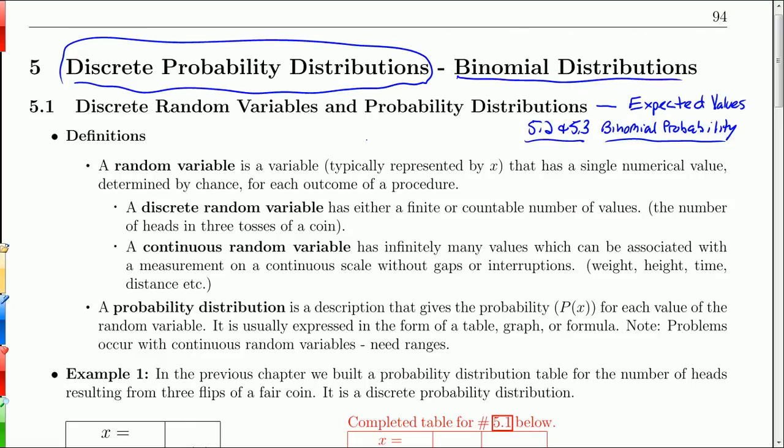So we start off with describing a discrete random variable and probability distributions for discrete variables. And we will also calculate expected values from a discrete probability distribution.